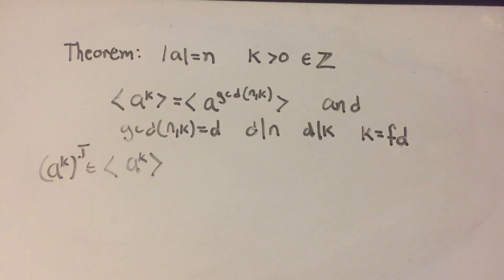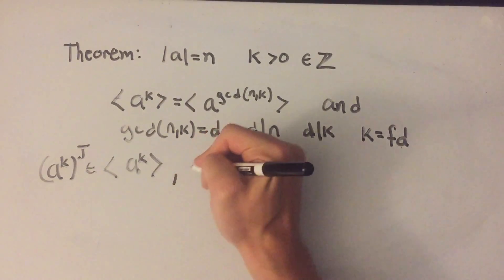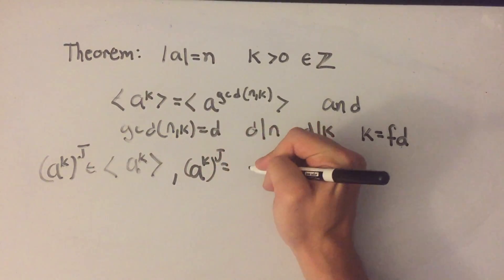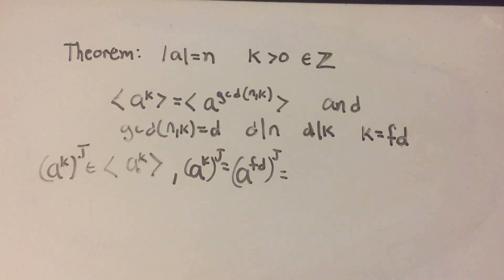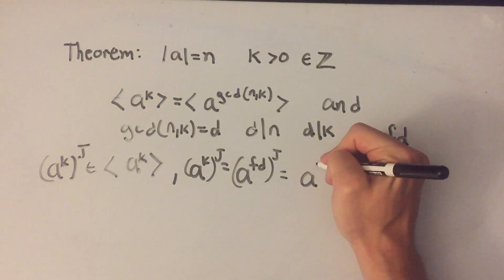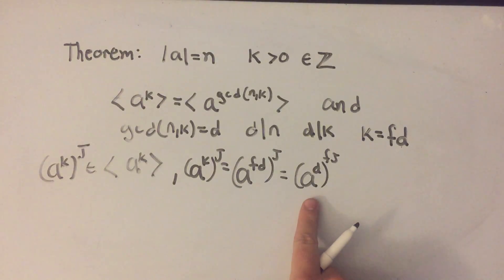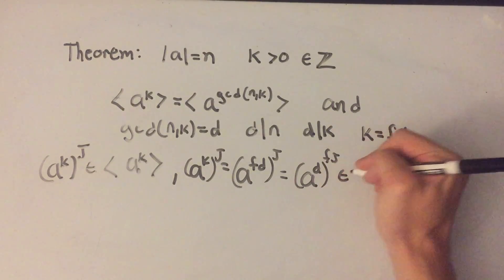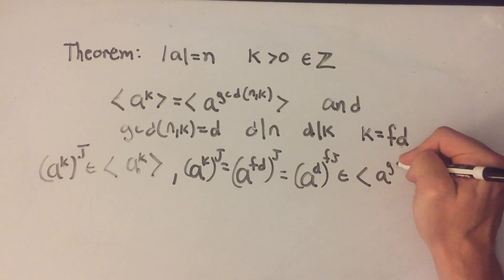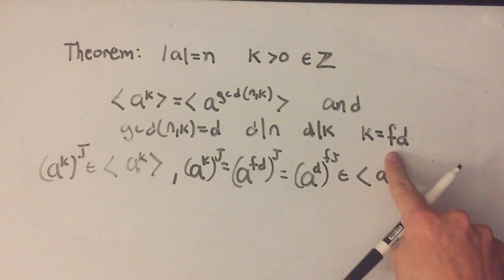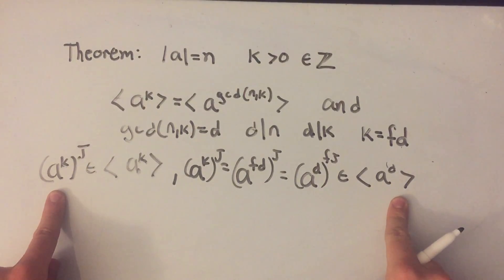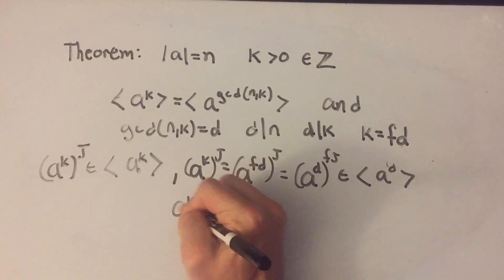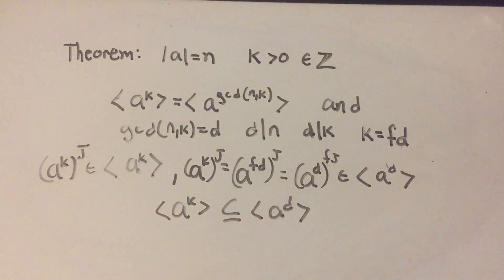A to the k to the j is in the set generated by A to the k. Since k equals f times d, A to the k equals A to the f times d, so A to the k to the j equals A to the d to the f times j by rules of exponents. But this is just some power of A to the d, which means this element is contained in the set generated by A to the d. So A to the k is contained within A to the d — that's the first inclusion.